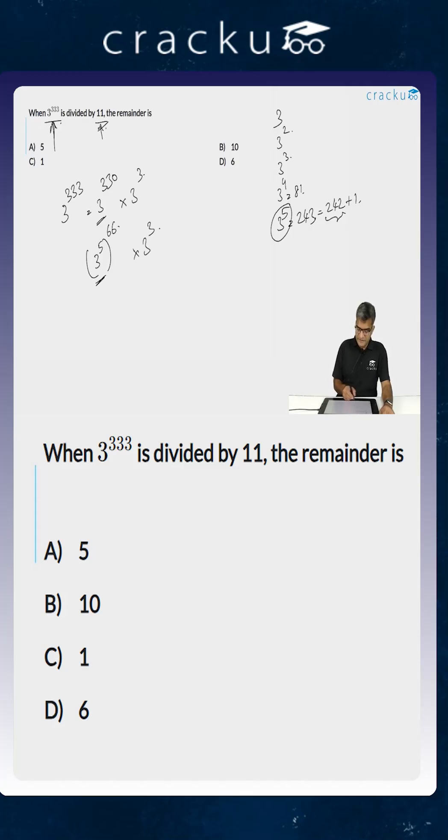Now 3 to the power 5 leaves a remainder of 1 when divided by 11. So 3 to the power 330 also will leave a remainder of 1 when divided by 11, and then you are left with 3 cubed which is 27. Now what is the remainder when 27 is divided by 11? That will be 5, which is option A.